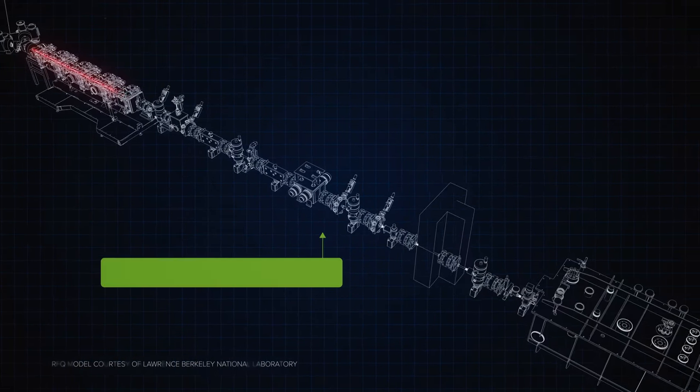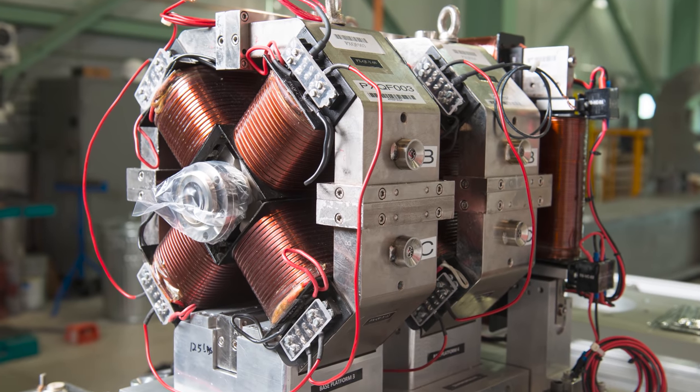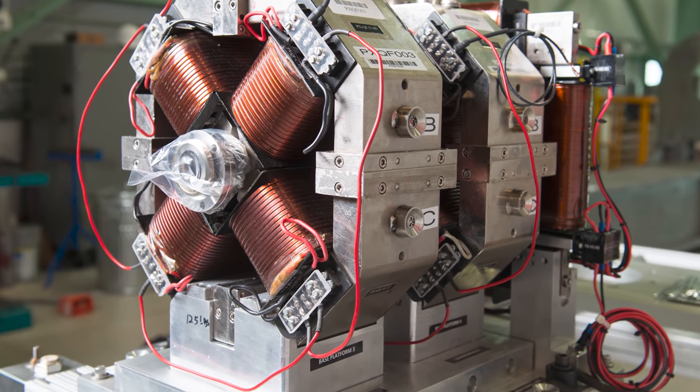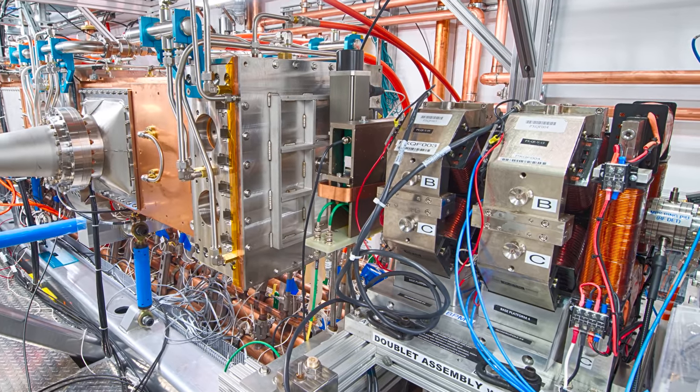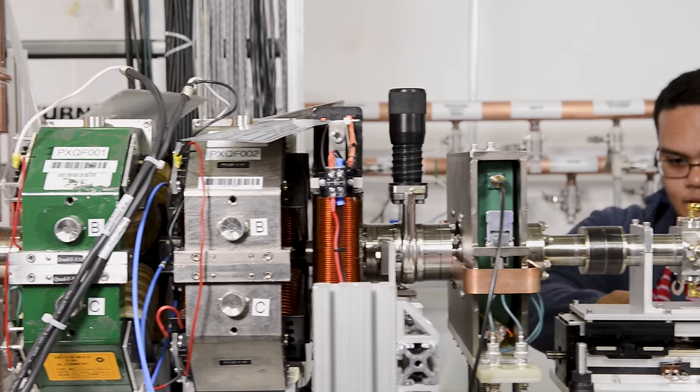As the beam exits the RFQ device, a series of magnets further focuses the beam and keeps the particles from straying from the center line. These magnets were built at the Baba Atomic Research Center in India. In total, India will contribute almost 100 magnets for PIP2 so that the beam stays almost laser-like throughout the accelerator.